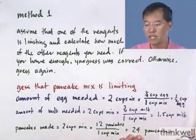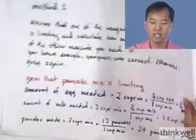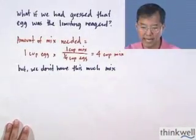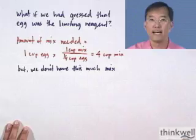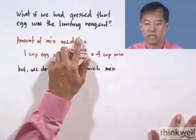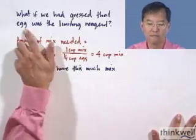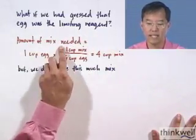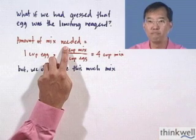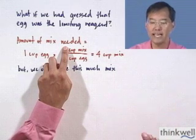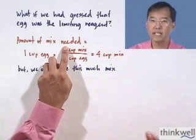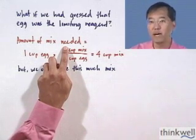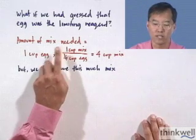But now let's suppose that we guessed incorrectly, or just guessed something else. Suppose we guessed that egg was the limiting reagent. And now, from this statement, we'll calculate how much mix we would need assuming that egg was the limiting reagent. What does that mean? That means we'll run out of egg first.